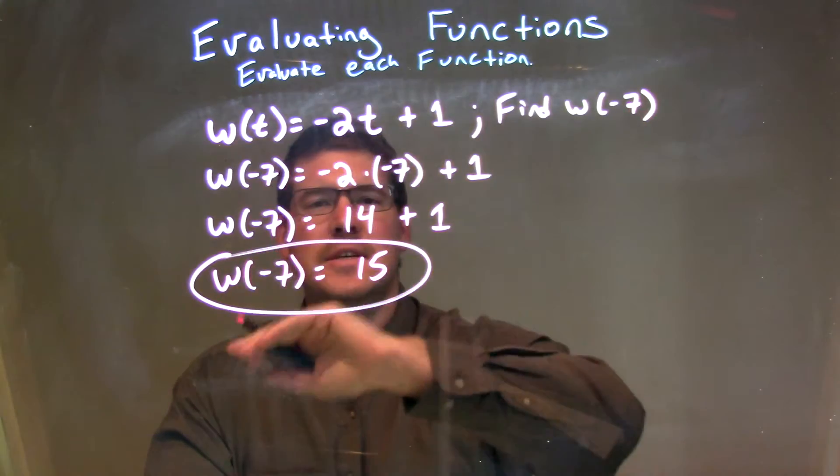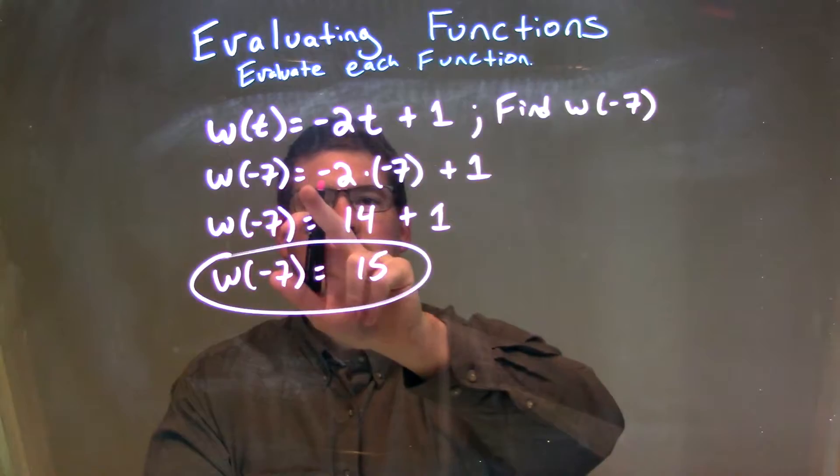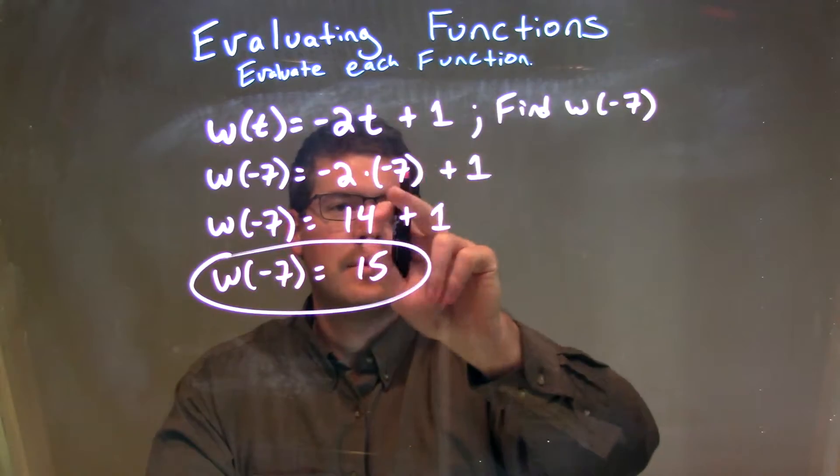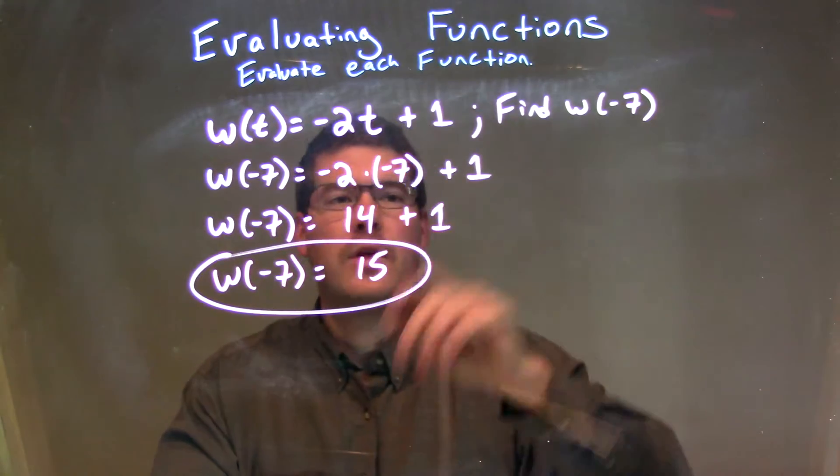Every single time I saw a t, I put a negative 7 in. So w of negative 7 is equal to negative 2 times, substituted in, negative 7 plus 1.